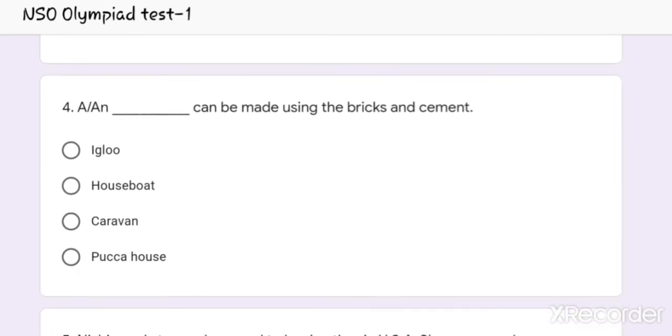Question number 4. A dash can be made using the bricks and cement. Option 1: Igloo. Option 2: House board. Option 3: Caravan. And option 4: Pukka house. And the correct answer is Option 4, Pukka house.